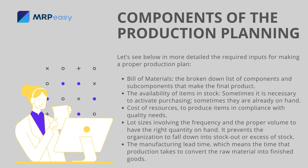The required inputs for making a proper production plan include: the bill of materials — the broken-down list of components and sub-components that make the final product; the availability of items in stock, where sometimes it is necessary to activate purchasing and sometimes they are already on hand; the cost of resources to produce items in compliance with quality needs; and lot sizes, involving the frequency and proper volume to have the right quantity on hand. This prevents the organization from falling into stock-out or excess stock.